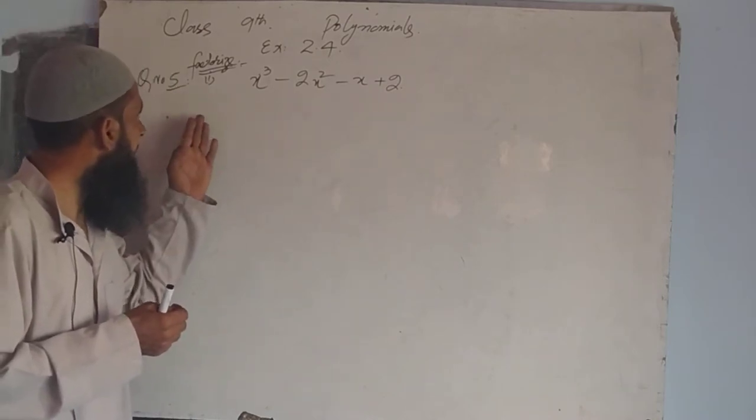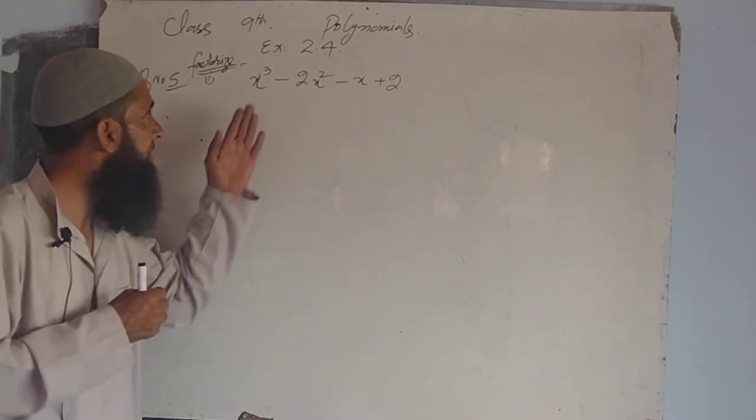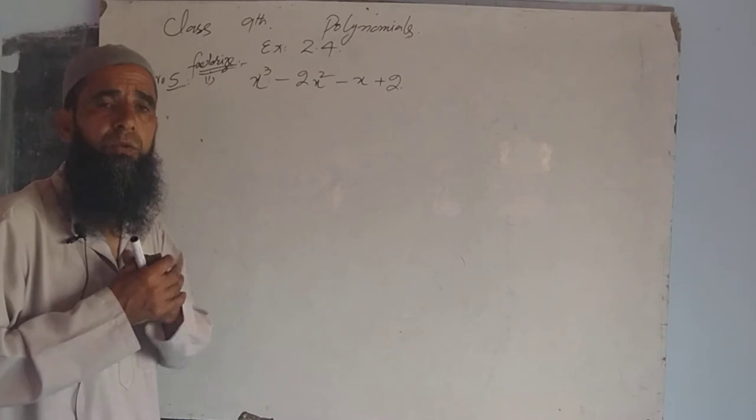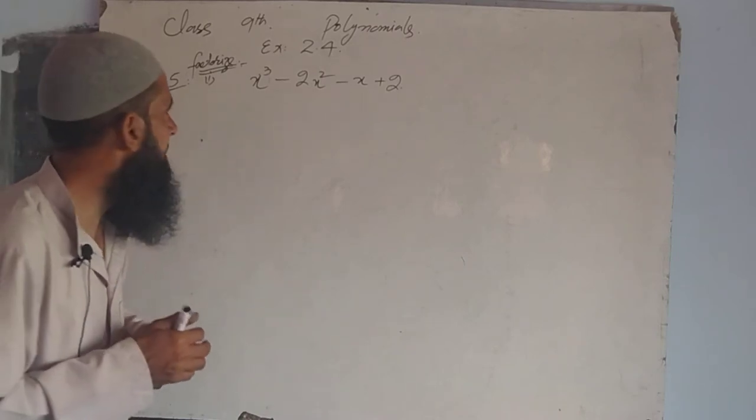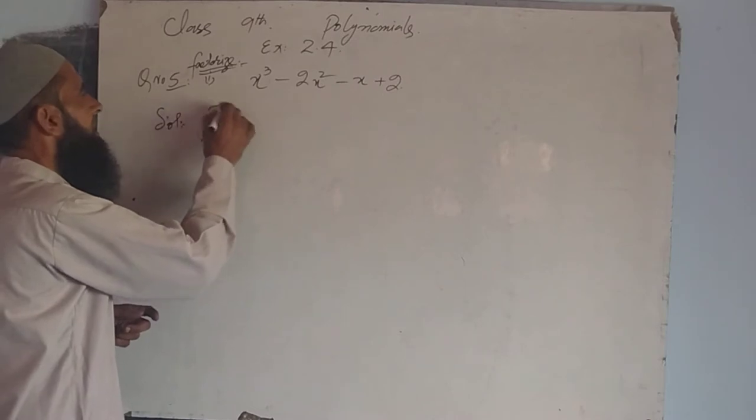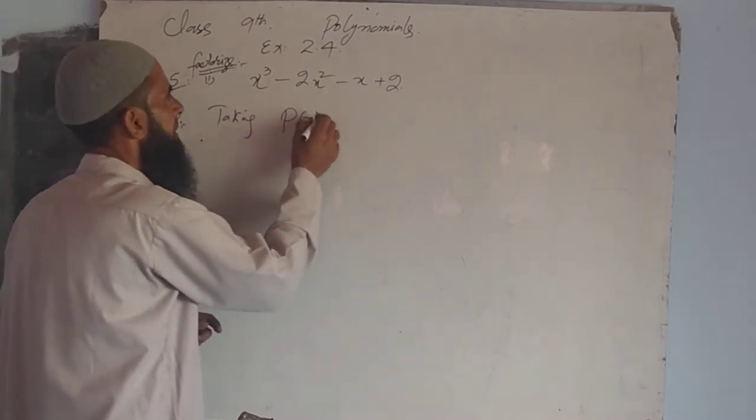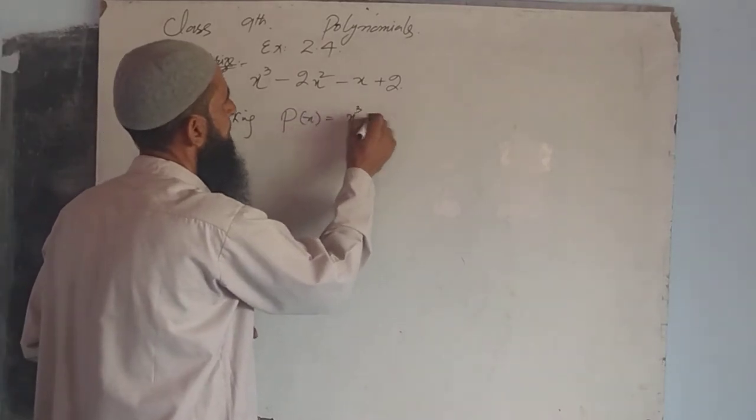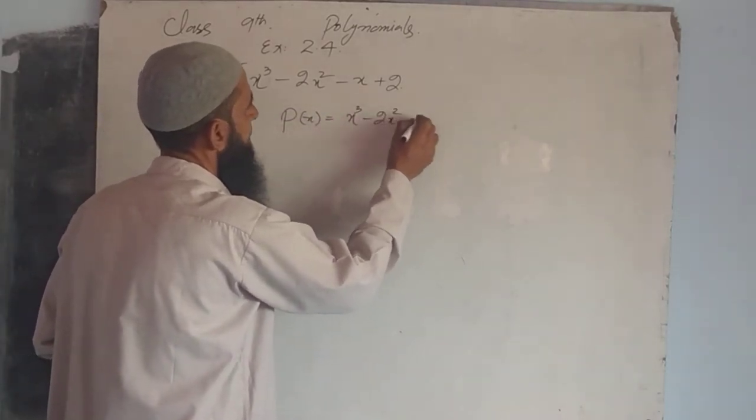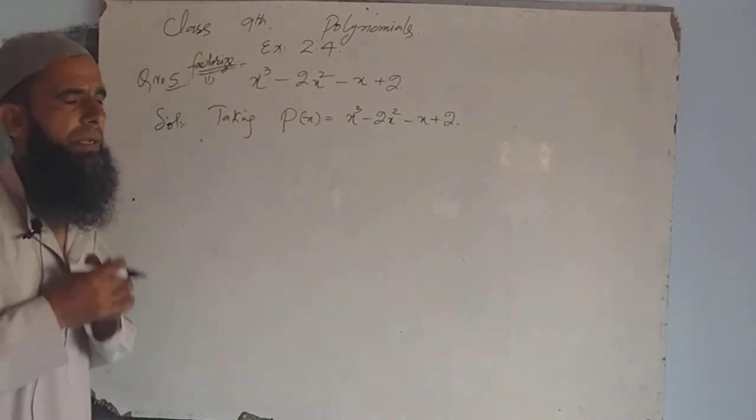We have cubic polynomials of degree 3. P(x) is equal to x³ minus 2x² minus x plus 2. This is our given polynomial.